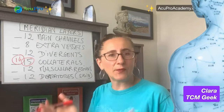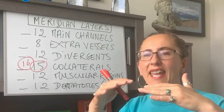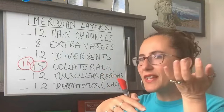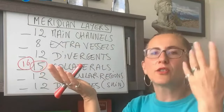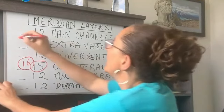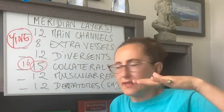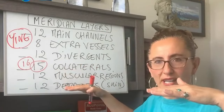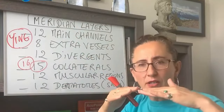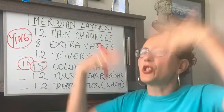The function of the collaterals is to reinforce the internal and external related meridians — they reinforce the yin-yang connected meridians, meaning the large intestine reinforces the lung and vice versa. The collaterals carry yin qi, or nutritive qi, buffering the space between the external muscular and dermatome layer and the internal deeper meridian layers.